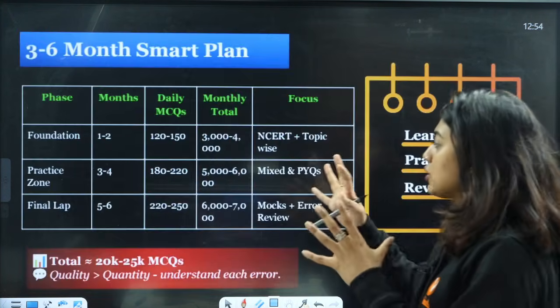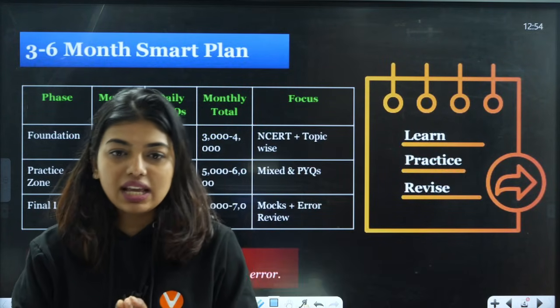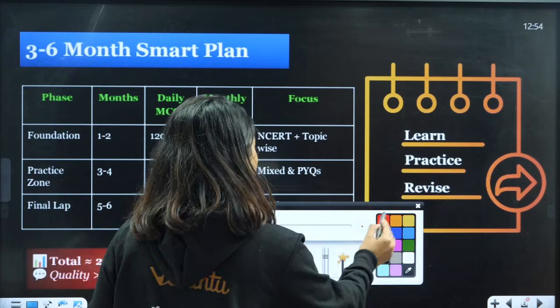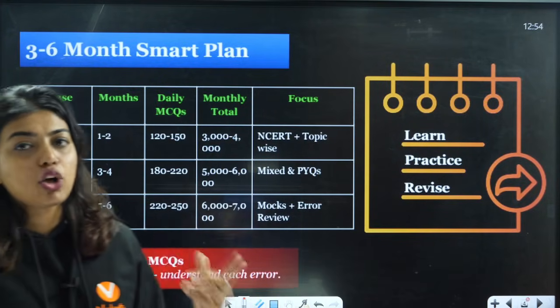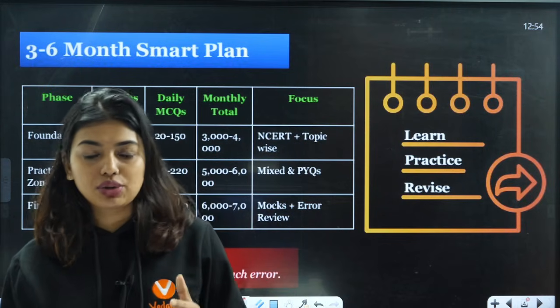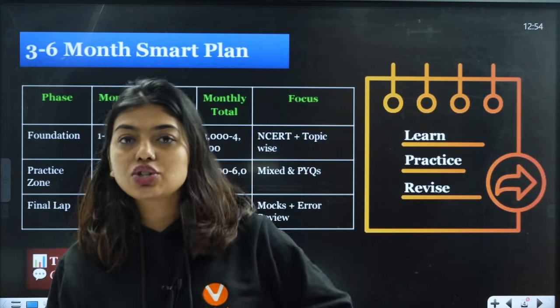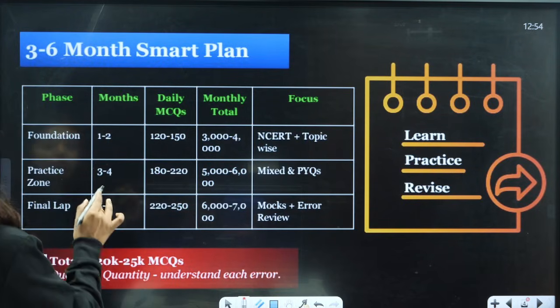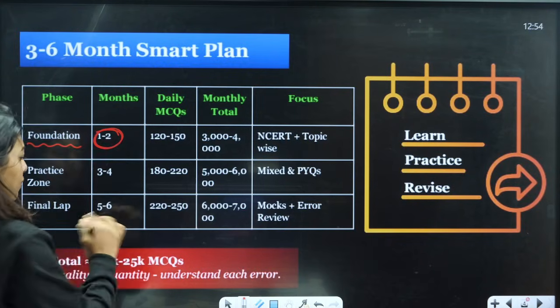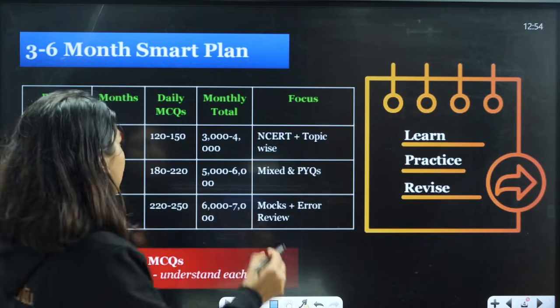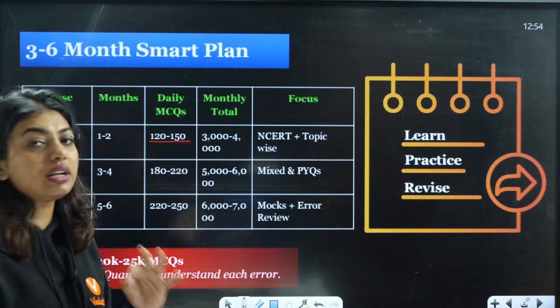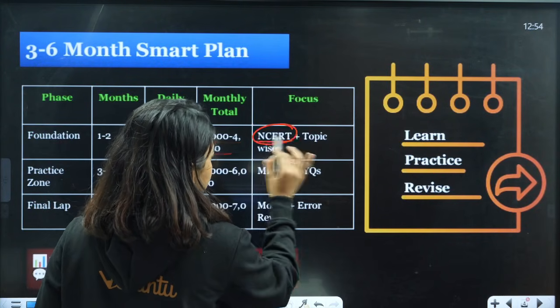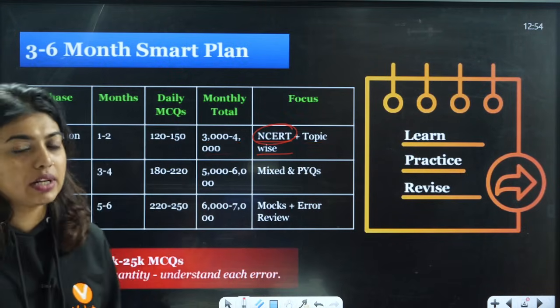Now listen to me. This is the number that one student gave us. I know this number might come out very shocking to you, but you ask me how much do toppers solve. Last year, a topper got 623 marks in NEET 2025, which is a difficult paper. He used to tell us in his foundation stage, that is one to two months (maybe November-December time), he used to solve 120 to 150 questions per day. That means on average 3,000 to 4,000 questions monthly, and mainly he used to focus on NCERT and topic-wise questions. He used to do chapter tests.